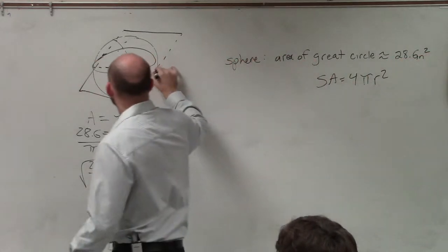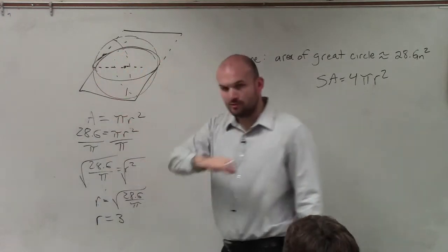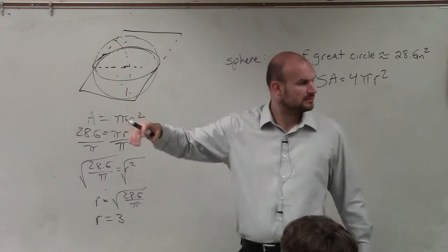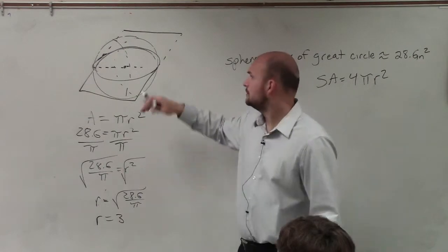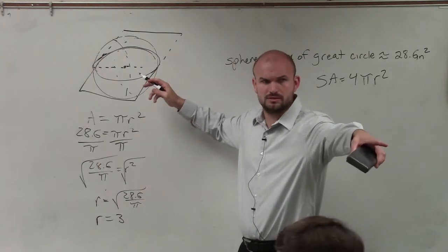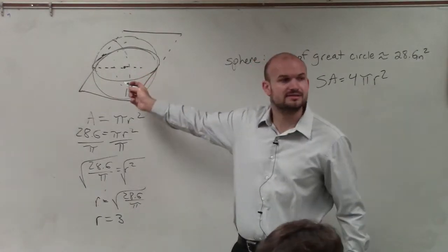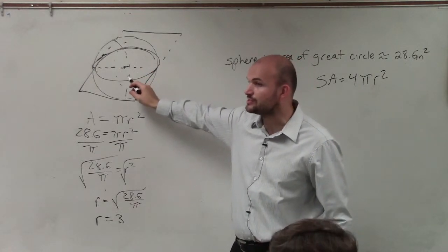So here's my great circle, right? There's my great circle. When the piece of paper cuts my great circle in half. So when I cut this in half, that's my radius of my circle.